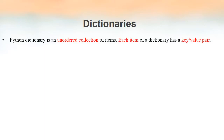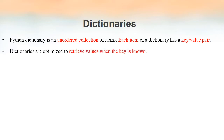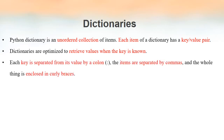First of all, we will define what is a dictionary in Python. A dictionary is an unordered collection of items, and each item in a dictionary is a key-value pair. Dictionaries are optimized in such a way that if we know the key, we will be getting the value associated with that key.